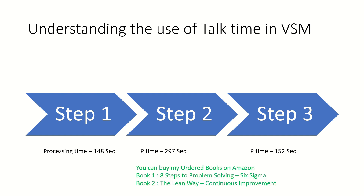Once you do that, you will be able to identify the full-time employees needed in the entire process or value chain: one resource at step one, two resources at step two, and one resource at step three — provided you have made that incremental improvement and reduced the processing time to 148.5 seconds.